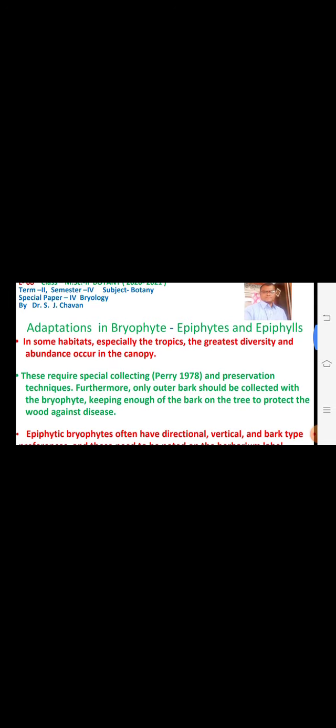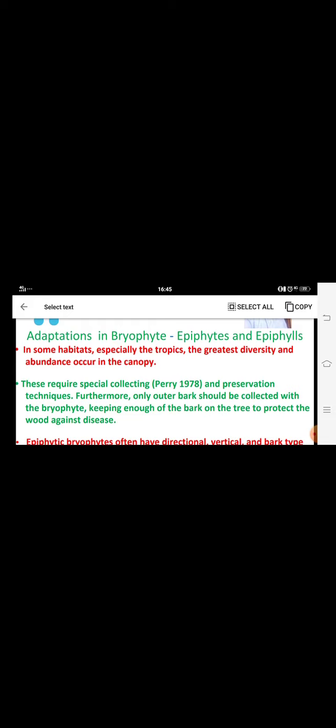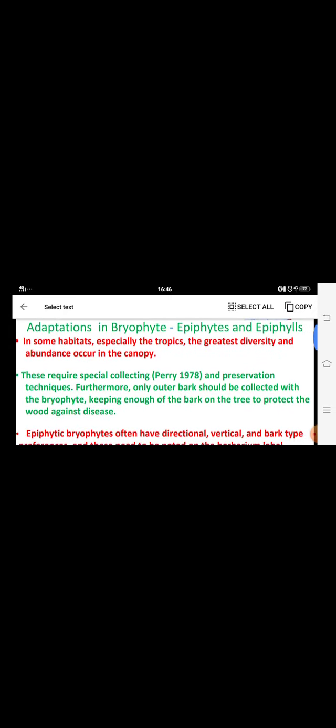Epiphytes and epiphylls are found in habitats generally seen in the tropics where high rainfall and high temperature exist, and therefore the greatest diversity is present there. In epiphyll diversity, thalloid members, leafy members, and mosses are present. Generally all mosses have different conditions and are indicators of water availability — xerophytes, hydrophytes, mesophytes, etc.